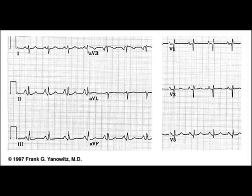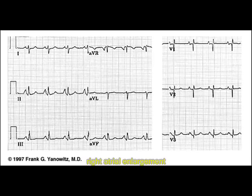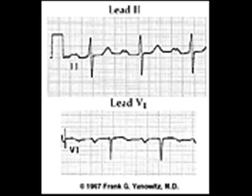Here you can see a big P wave. This is very common in right atrial enlargement, because when the atria is big the P wave will be big. Now you can also see left atrial enlargement. In left atrial enlargement you can see a notched P wave or M-shaped P wave, especially in the upper EKG. This is characteristic of left atrial enlargement.